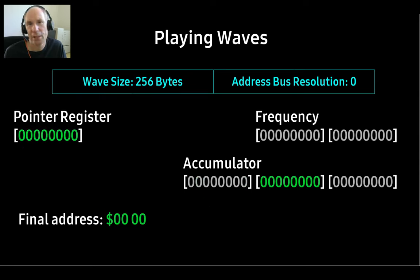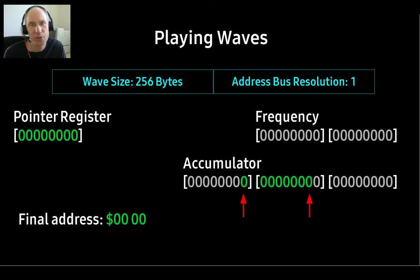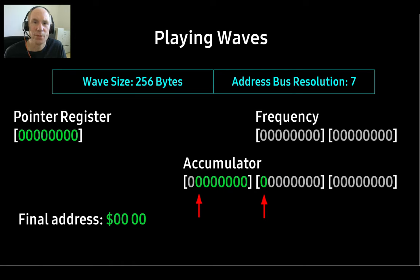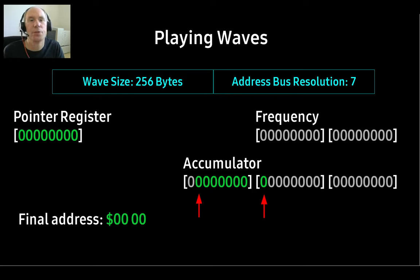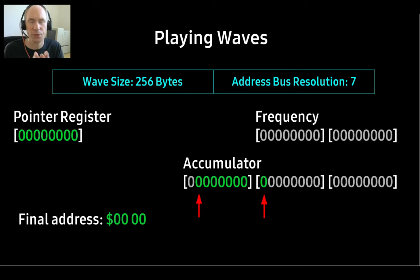What about the address bus resolution? It'll change the selection of bits in the accumulator — as you can see, it has shifted to the left. This may look strange at first, but it's very useful. By setting the address bus resolution to match the wave size, NTP can use the same note frequency table for every wave. Why does this work? Every time the wave size is doubled, we simply halve the frequency value. Not easy to understand when you hear it the first time — just let it sink in.